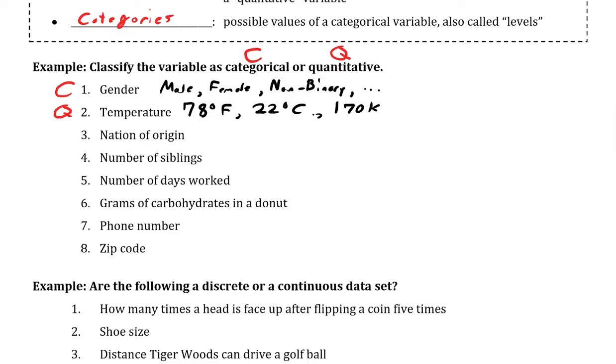If I look at the next one, nation of origin, I'm going to consider that to be categorical, because I could have a nation be USA, France, etc. These are categories, compared to number of siblings, which I could have zero siblings, one sibling, two siblings, etc. These are numerical in nature, and if I add them together, I just get more siblings. Same for number of days worked, could also be zero, one, two, etc. So it would also be quantitative in nature.